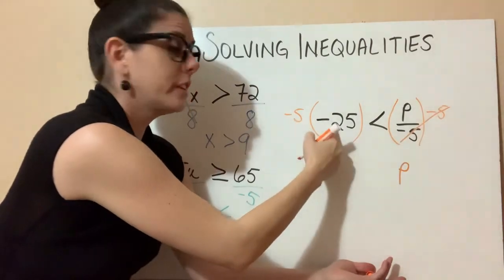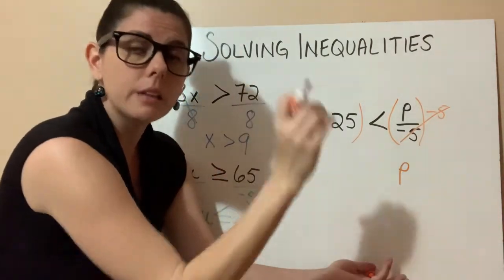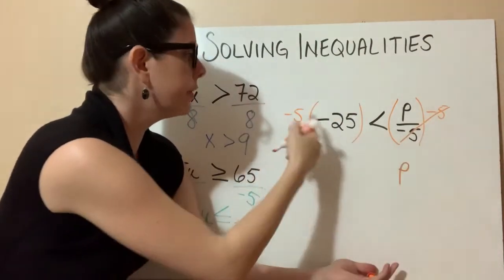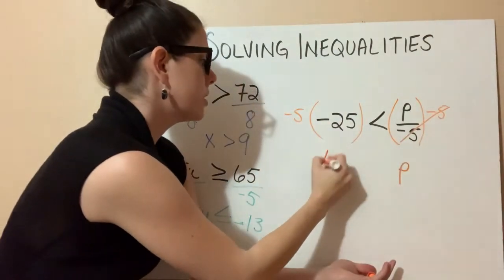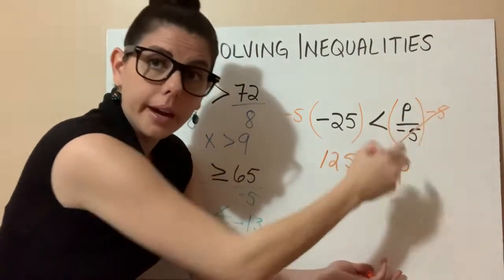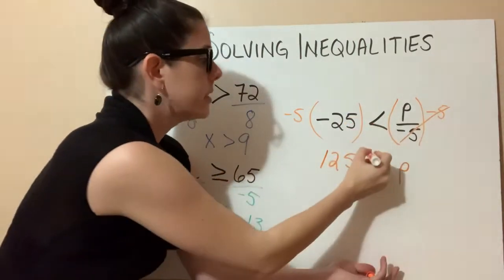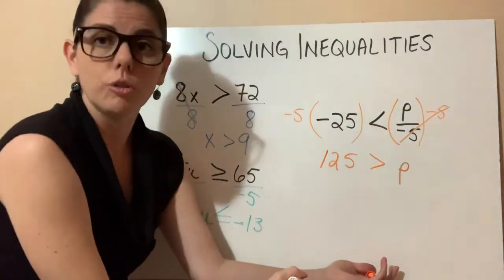Negative 5 times a negative 25 - remember our rules of integers. A negative times a negative will equal a positive, so 5 times 25 is just going to equal 125. And because we multiplied by a negative number, this less than sign is going to flip and become a greater than sign.